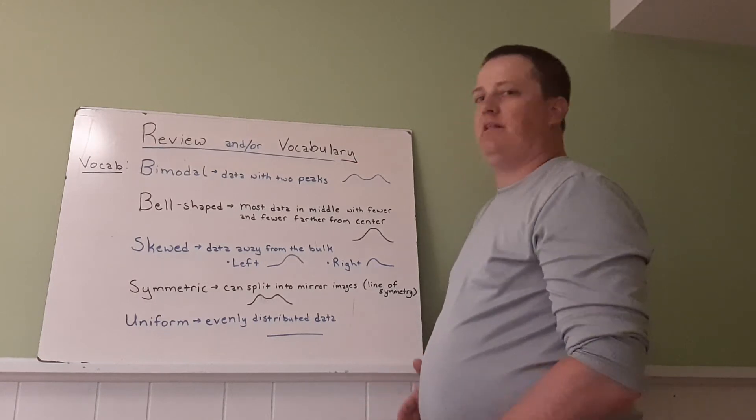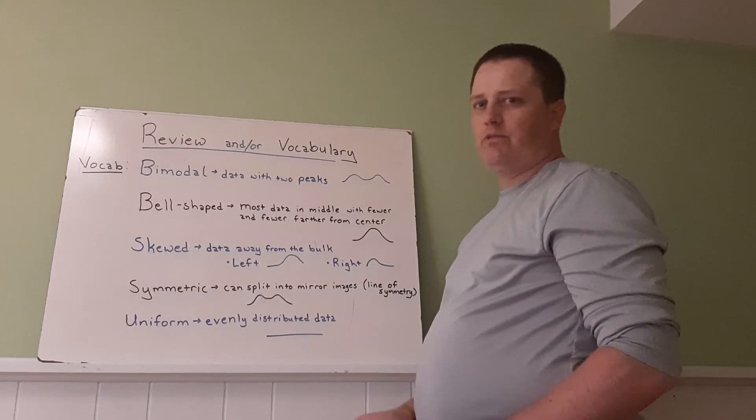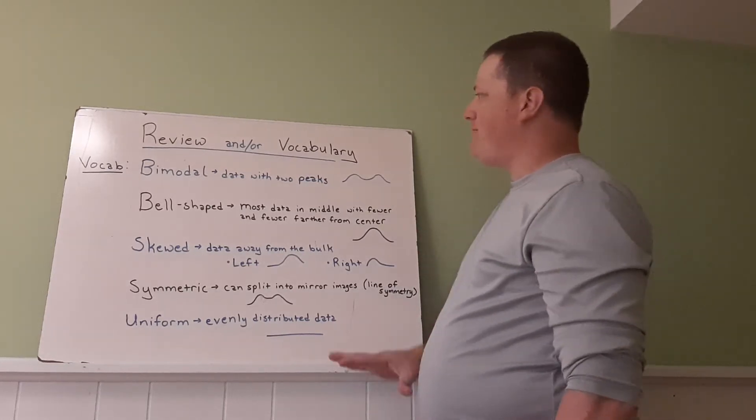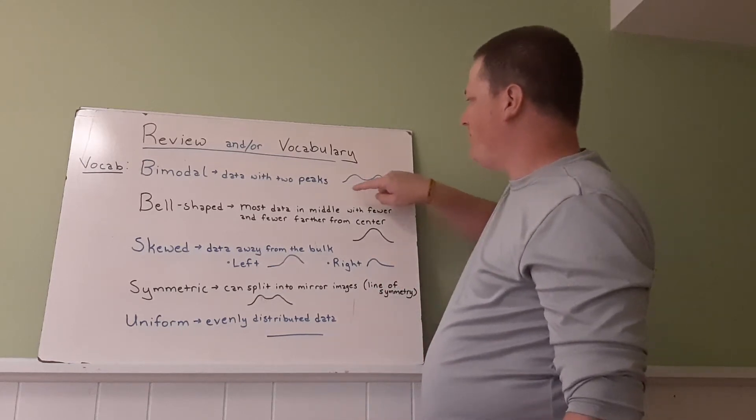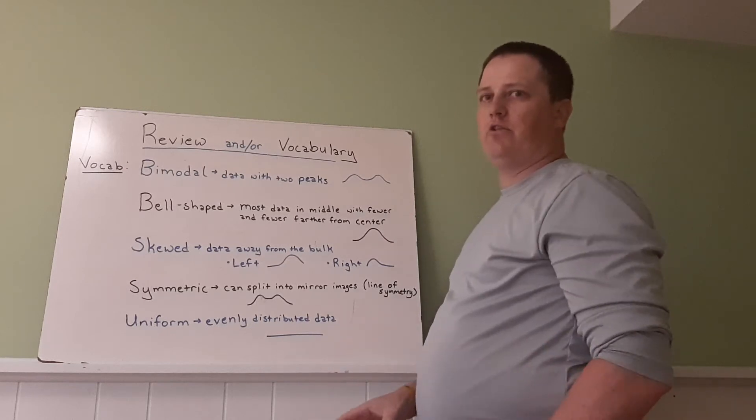We have five vocabulary words that are going to be important that you understand here. One of the things with these vocabulary words is to fully understand them, the shape is important here. So a lot of times with your data, it will be useful to take a pen or a pencil and kind of map out the general look of the data.